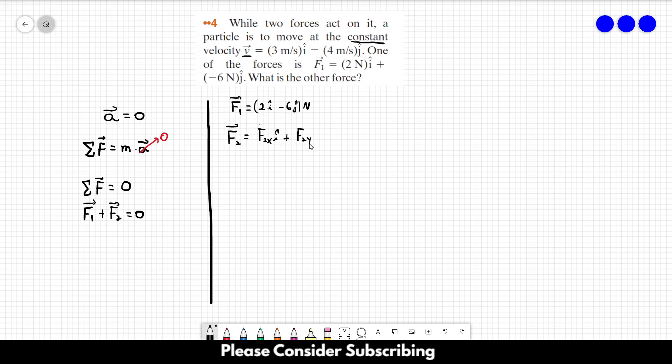plus F2y in the J direction. So let's sum F1 plus F2x in the I direction plus F2y in the J direction, and we know that this is zero.